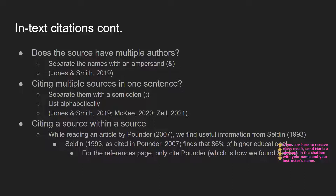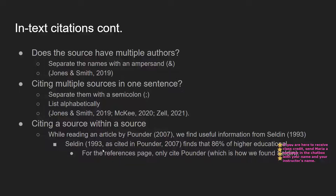To format this, you use: Selden (1993, as cited in Pounder, 2007). Selden is the original author, so their last name and year come first. Then comma, 'as cited in,' followed by Pounder, comma, 2007 — following the standard last name, comma, year format. For the references page, you will only list Pounder, which is the source through which you found the Selden statistic originally. This can be tricky, so please ask if anything is unclear.